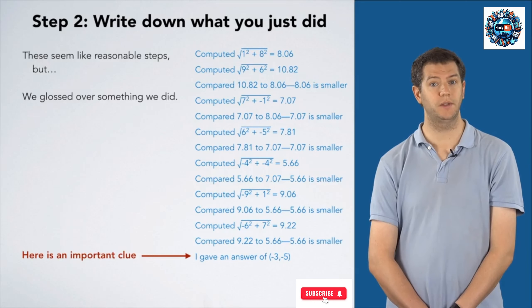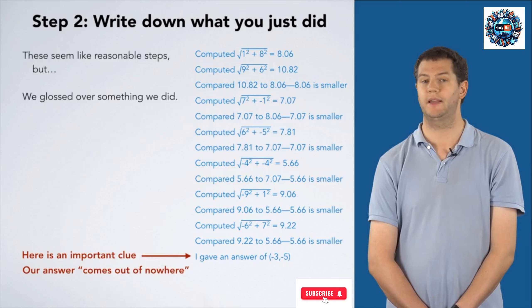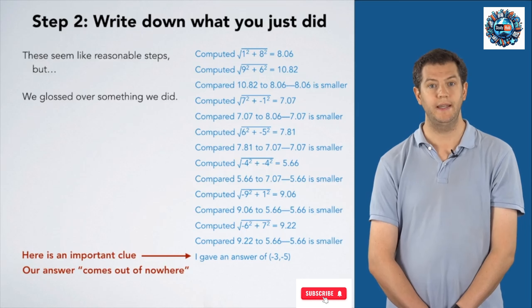Then, we're going to notice we don't see (-3,-5) anywhere else. The fact that our answer seemingly comes out of nowhere indicates that we're missing something. We did some step without consciously thinking about it and writing it down, and we need to fix that before we go on.